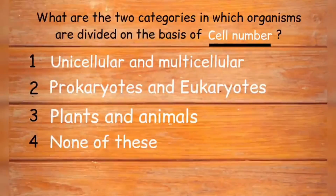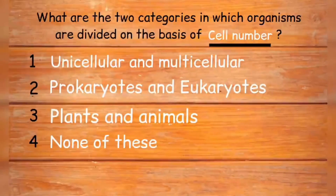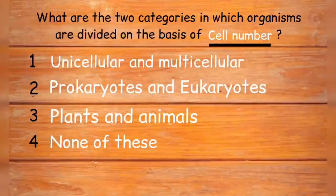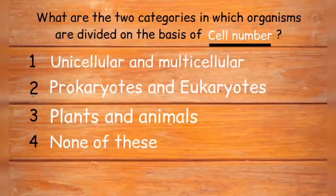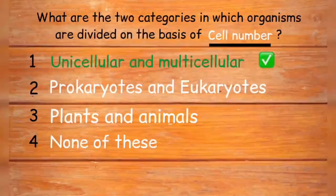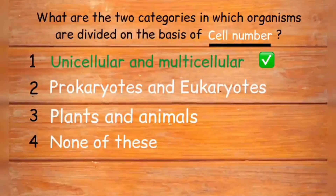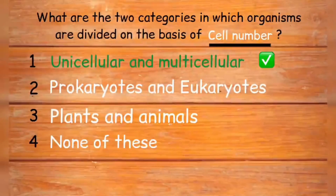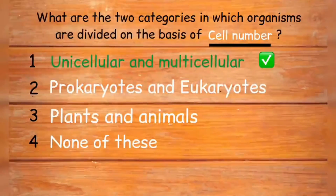What are the two categories into which organisms are divided on the basis of cell number? Options are: unicellular and multicellular, prokaryotes and eukaryotes, plants and animals, or none of these. On the basis of the number of cells, organisms can be divided into unicellular and multicellular. Unicellular organisms comprise only one cell, while multicellular organisms are made up of more than one cell or many cells. Option one is the right answer.